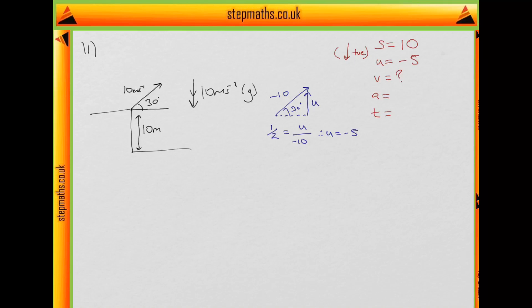V we don't know, but we're not actually concerned with V. It won't come into our equations. A we know is plus 10 meters per second to minus 2, and T is what we're trying to calculate.